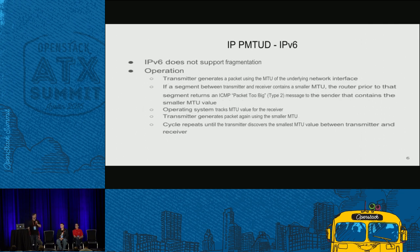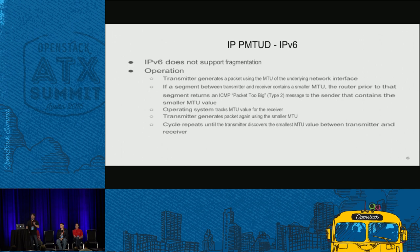With IPv6, they removed the feature of fragmenting packets entirely. The smallest MTU is 1280 bytes. The same type of operation applies: if you hit a hop where the MTU is smaller than the packet size sent, it's sent back to the sender and negotiation happens. If successful, communication between sender and receiver can continue.